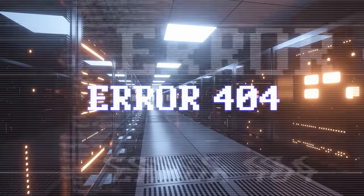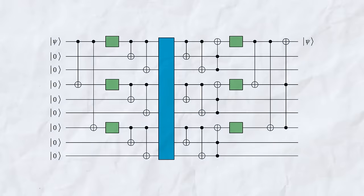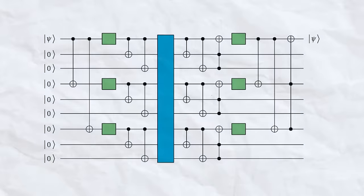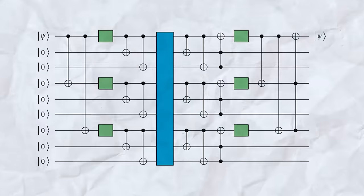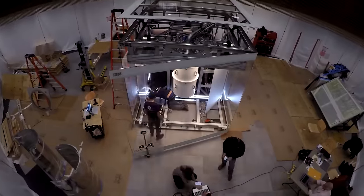There's a catch though. Quantum computers are error prone. To make them truly useful, they need a way to fix these errors. IBM is working on quantum error correction, a fancy way of saying they're figuring out how to make these machines more reliable. It's a tough nut to crack, but it's essential for building large-scale quantum computers.